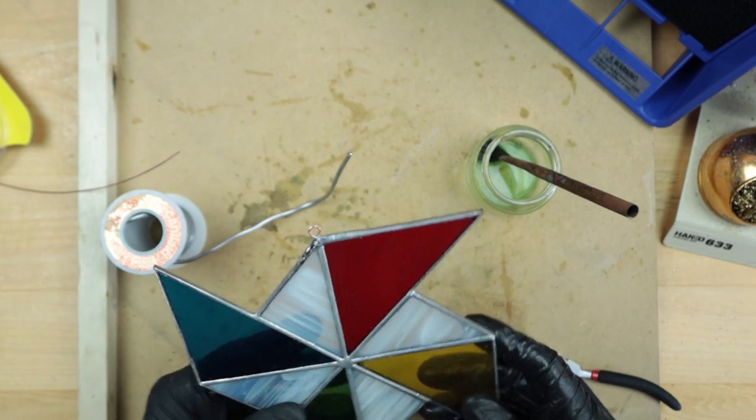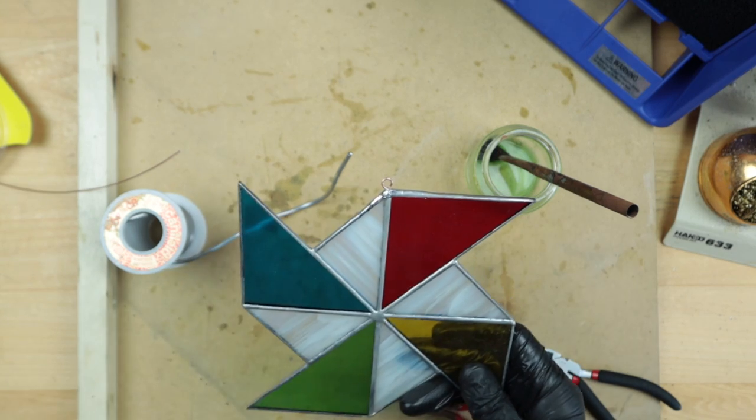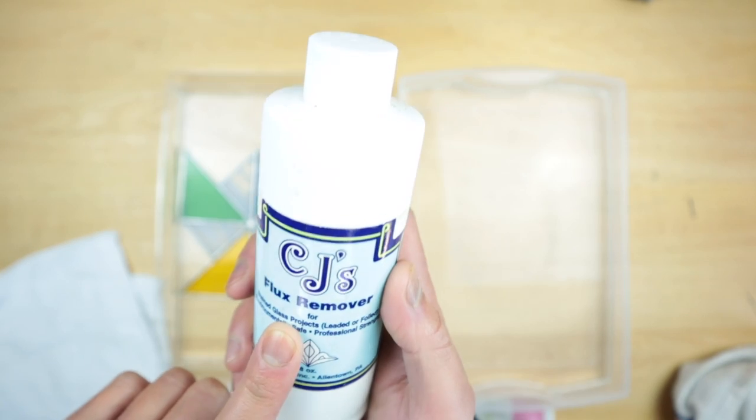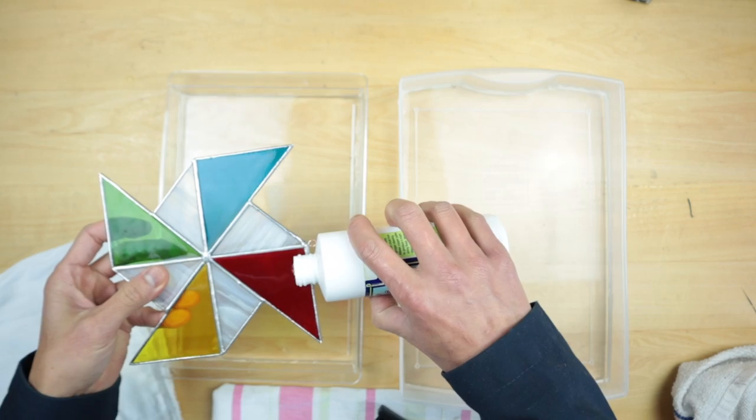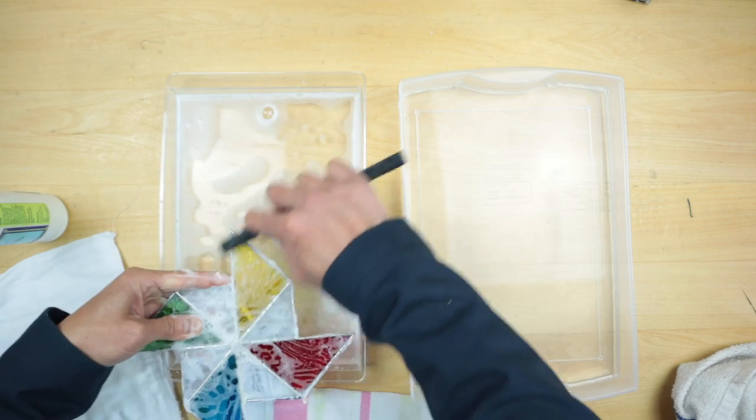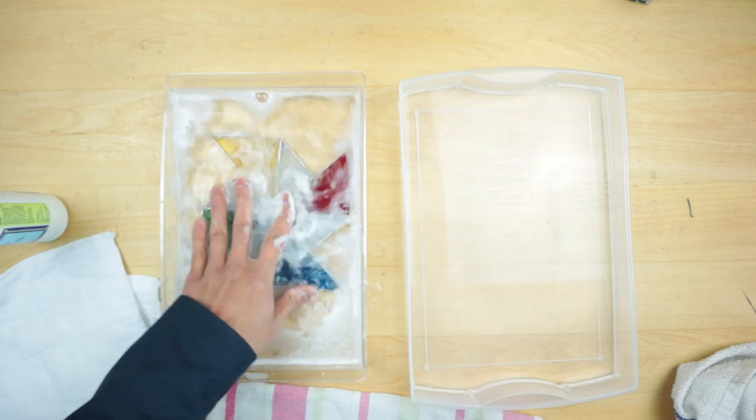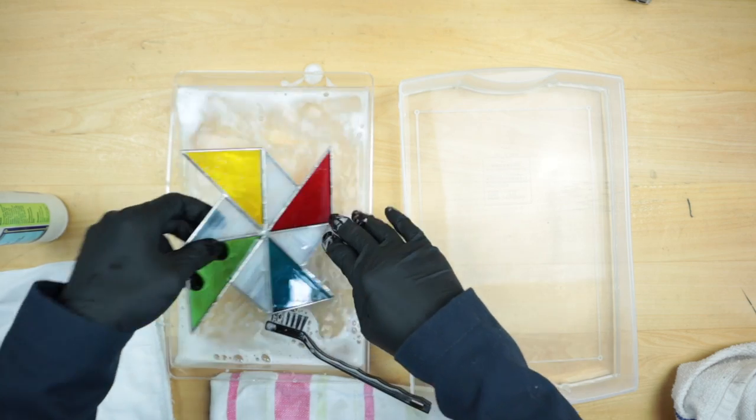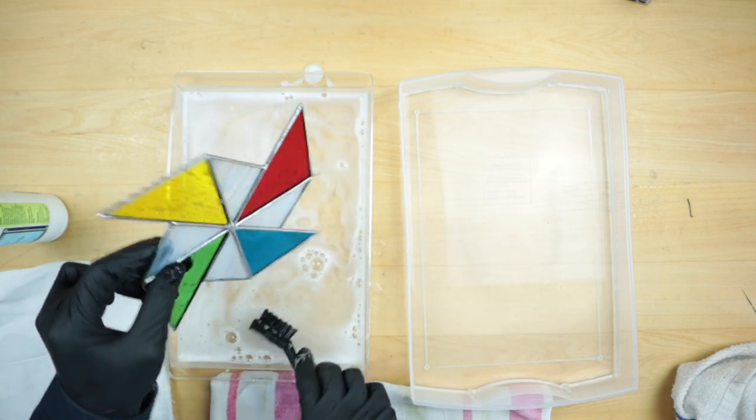We're done with the soldering. Let's clean off all the flux and we'll get ready for the patina. So I like to use CJ's flux remover for this cleaning part. You can use soap and water. Wearing the gloves now just to make sure that all the oils from my hands don't transfer it onto that solder here.